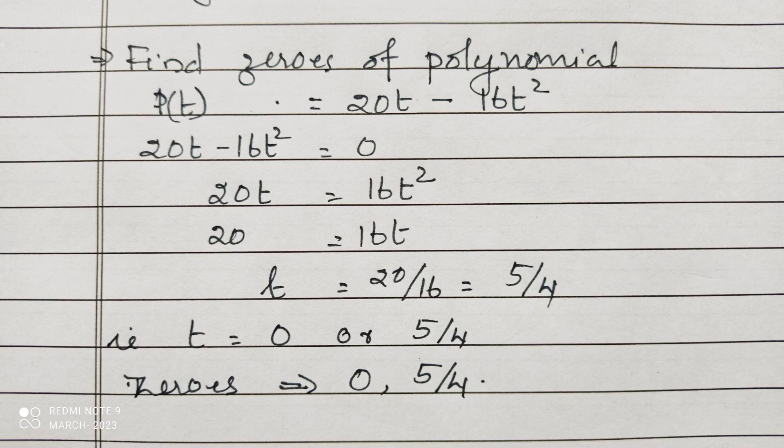Also, we can say t = 0. Now we got t = 5/4. The zeros of the polynomial are 0 and 5/4.